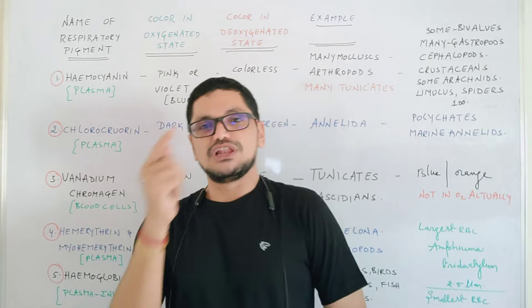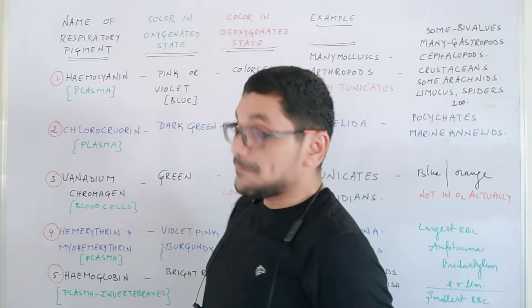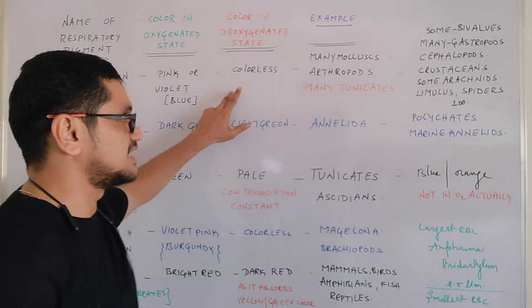Let us see the respiratory pigments briefly. The first one is hemocyanin. Hemocyanin is generally present in a bluish color. In oxygenated state it will be blue in color, and in deoxygenated state it is colorless.